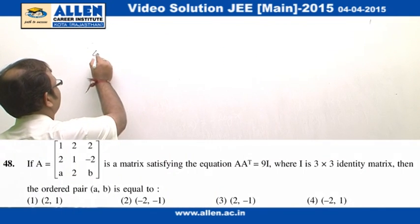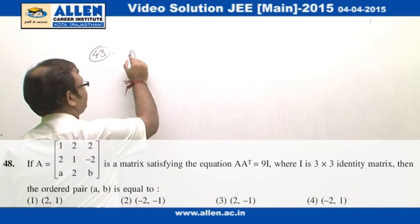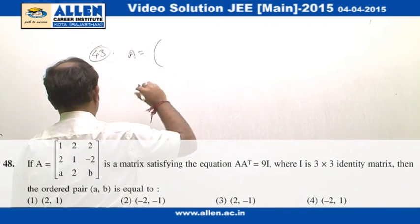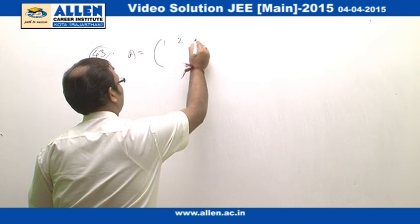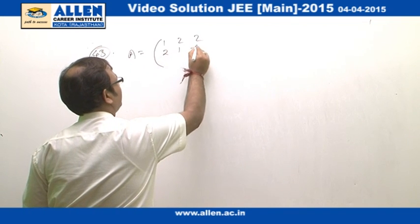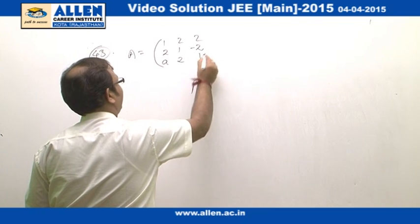Question number 48. We are given a matrix A: 1, 2, 2, 2, 1, minus 2, A, 2, and B.